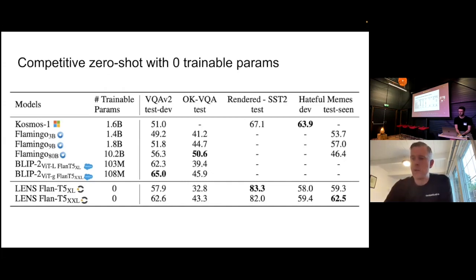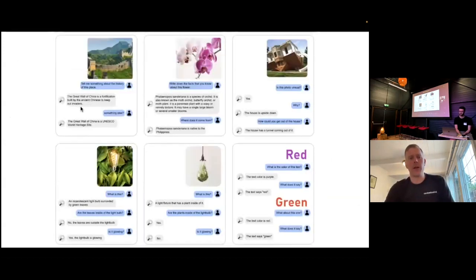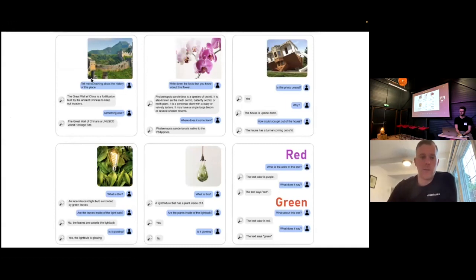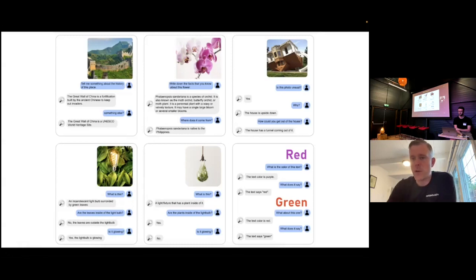On OKVQA and on SST — rendering SST as images — it does much better. On Hateful Memes it outperforms all of the Flamingo models. I think this is a quite surprising result, and it basically means that maybe we have to go back to the drawing board when it comes to how we deal with multimodality and pre-training in big foundation models. You can upload pictures, it turns those into text behind the scenes, and you can say something like 'tell me about the history of this place' — it figures out what the place is and tells you a story. It even handles Winoground images and unusual situations like an upside-down house or the Stroop test effect.